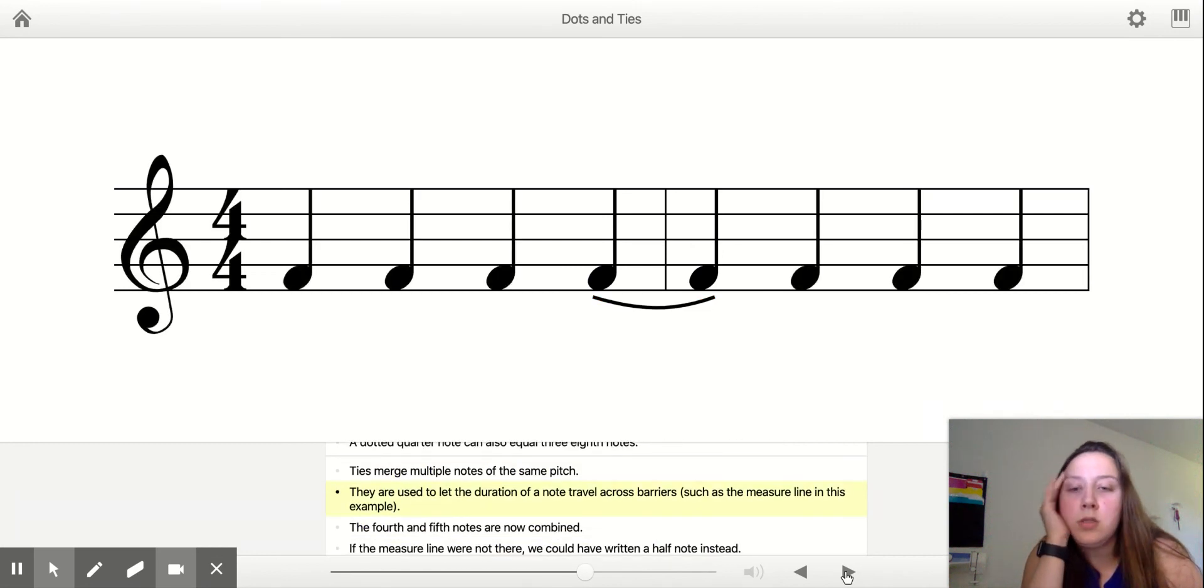They are used to let the duration of the note travel across bar lines such as a measure, such as the measure line in this example. So ties are great if you get to the end of the measure, you only have one beat left in your measure, but you really want that note to be two beats, well then you could tie it.